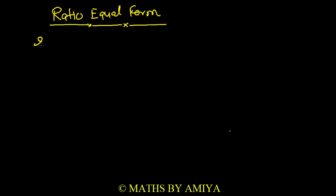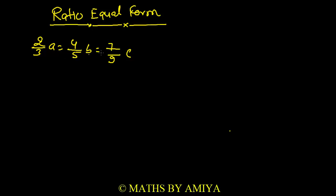In this we have 2/3 A = 4/5 B = 7/9 C, and we will have a question. This is a ratio equal form because we are comparing 3 variables A, B, C. How do we solve this type of question?